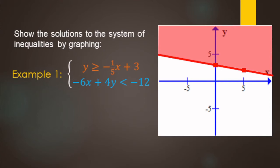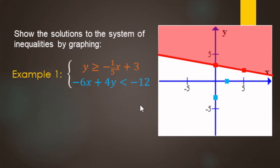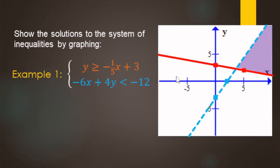The bottom blue equation is in standard form — x, then y, then the inequality symbol. We graph standard form by intercepts. For the x-intercept, divide by negative six: negative 12 divided by negative six gives positive two. For the y-intercept, divide by four: negative 12 divided by four gives negative three. It's strictly less than so the boundary line is dashed, and we shade below. The solution region is where blue and red overlap.